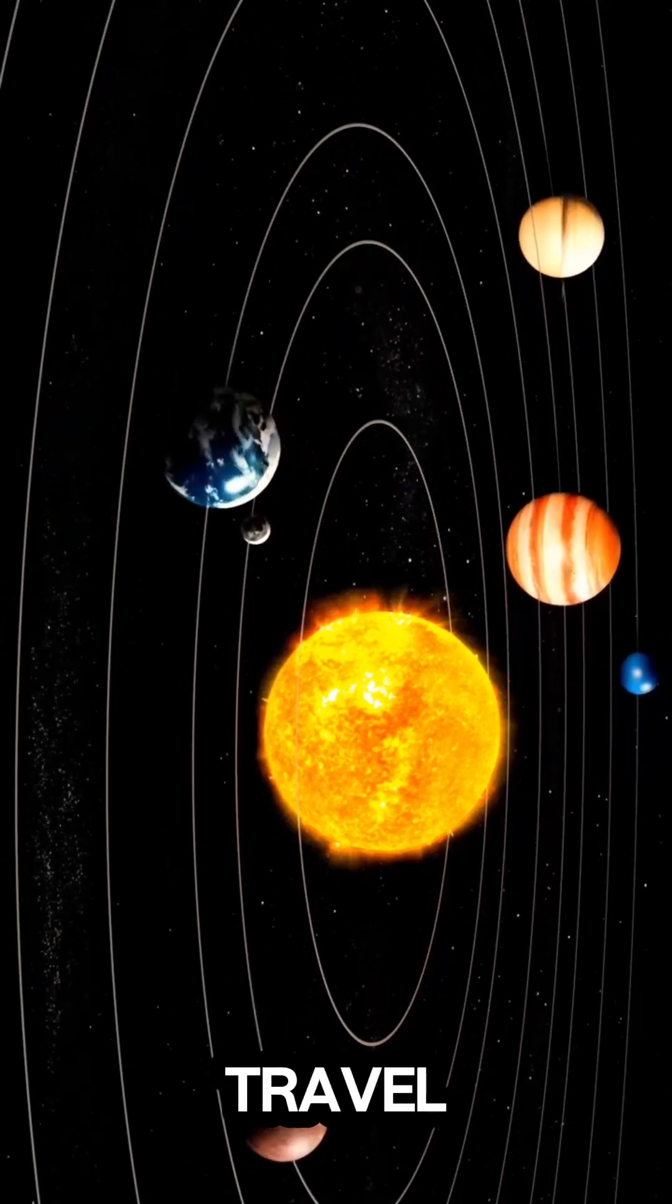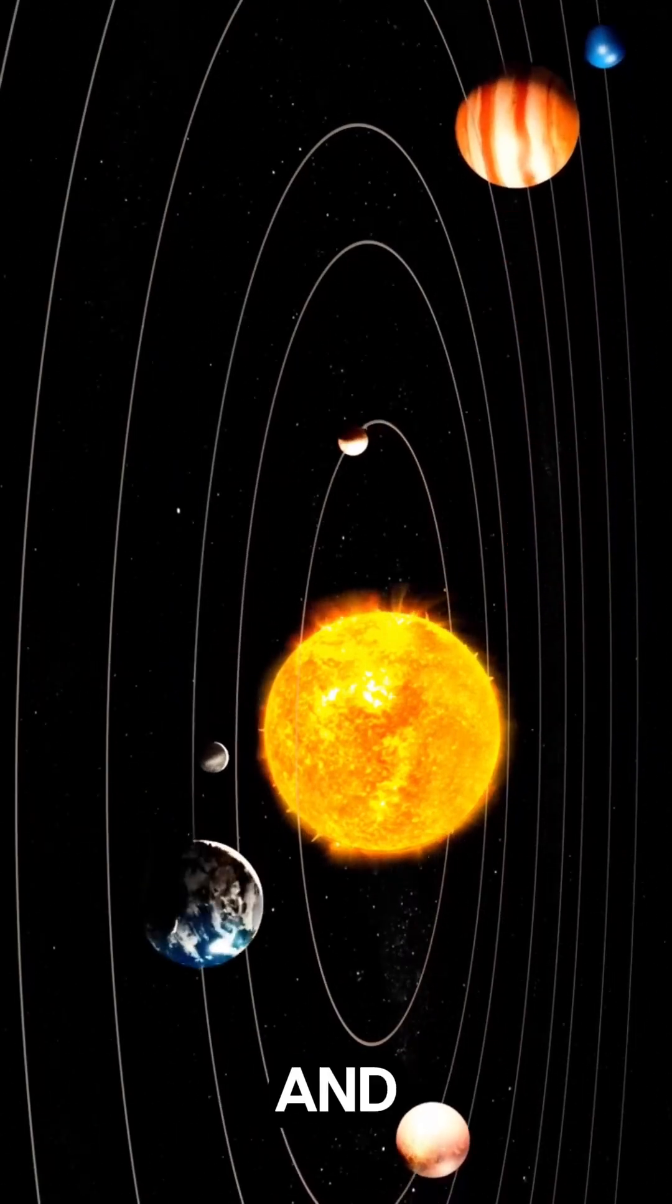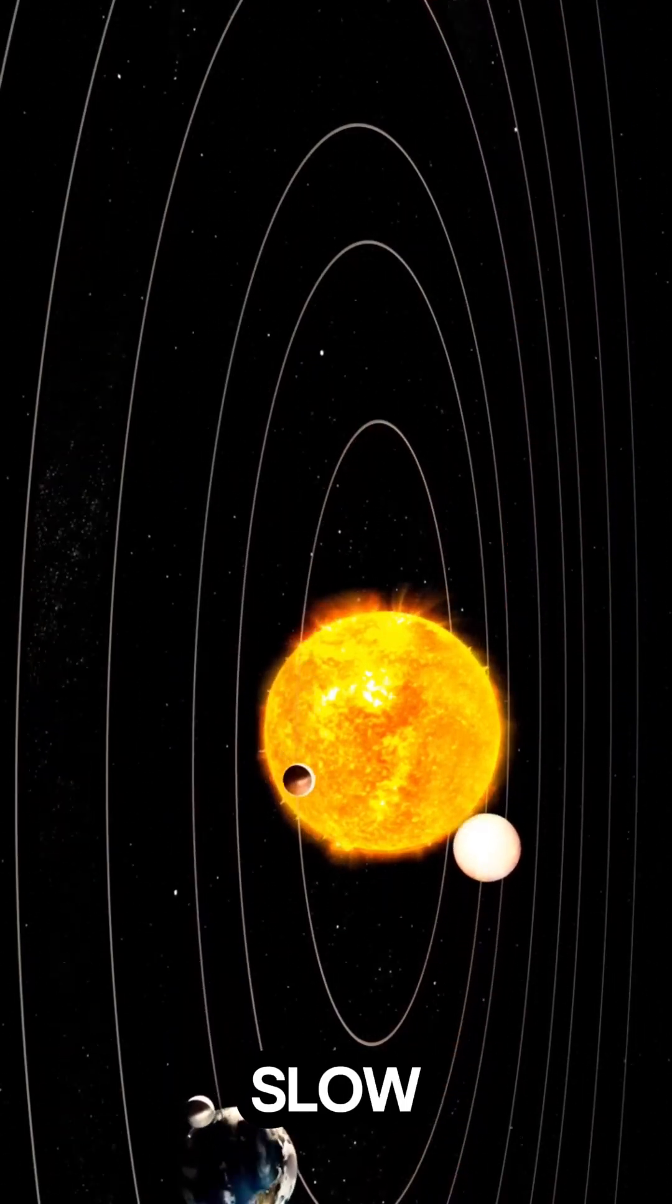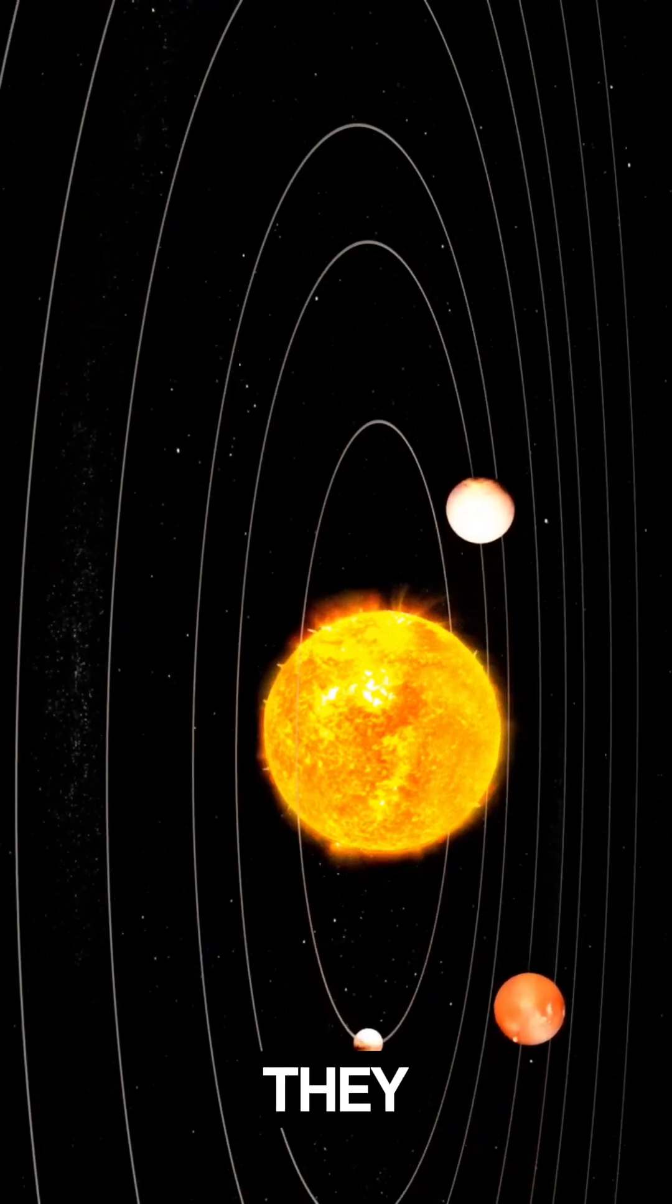Objects in orbit travel at precise speeds to balance gravity and inertia. Too slow, they fall. Too fast, they escape.